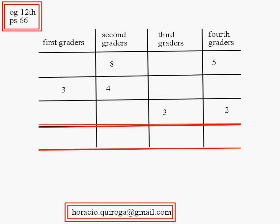This is problem solving 66 of the official guide 12th edition. Pretty much what we are told here in the problem is that at a school the ratio of 2nd graders to 4th graders is 8 to 5.